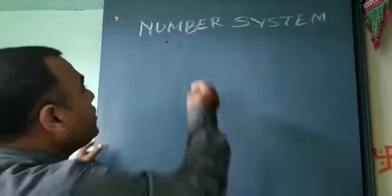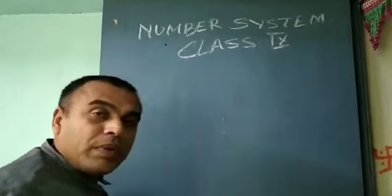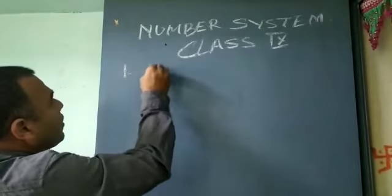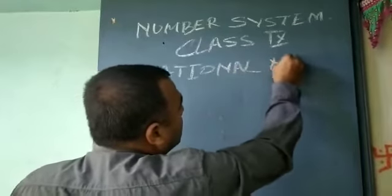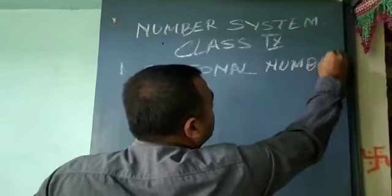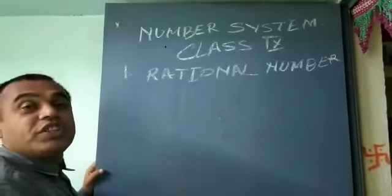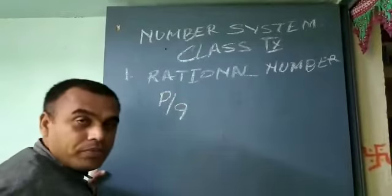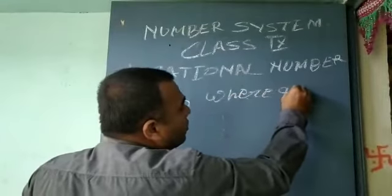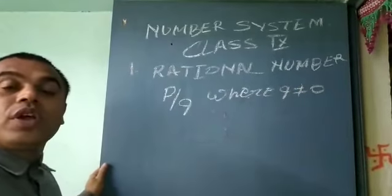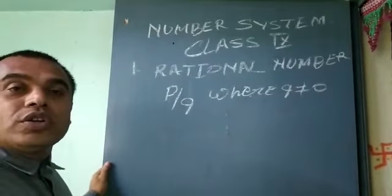So in class 9, we will study about rational numbers. So what are rational numbers? A number which is in the form of P by Q, where Q is not equal to 0. So all the natural numbers, whole numbers, and integers come within the rational numbers.